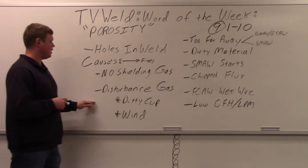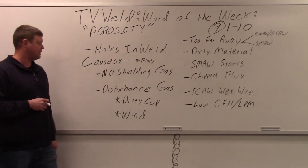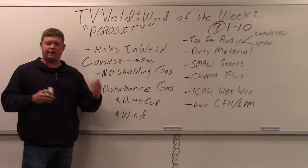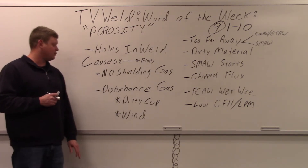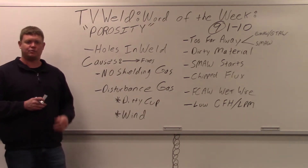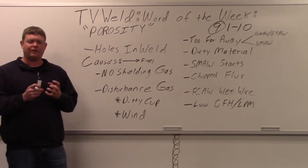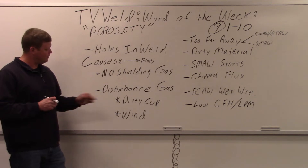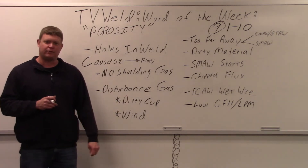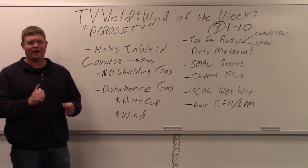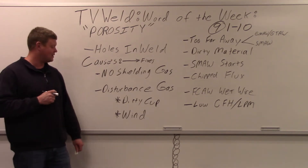Next is a disturbance in the gas — something preventing it from coming out cleanly. One of the most common issues with MIG welding is a dirty cup. If you're welding all day and spatter gets stuck in the cup, it'll eventually prevent the shielding gas from coming out and you'll get porosity. The fix is to clean the cup every once in a while using MIG pliers to pry all the spatter out.